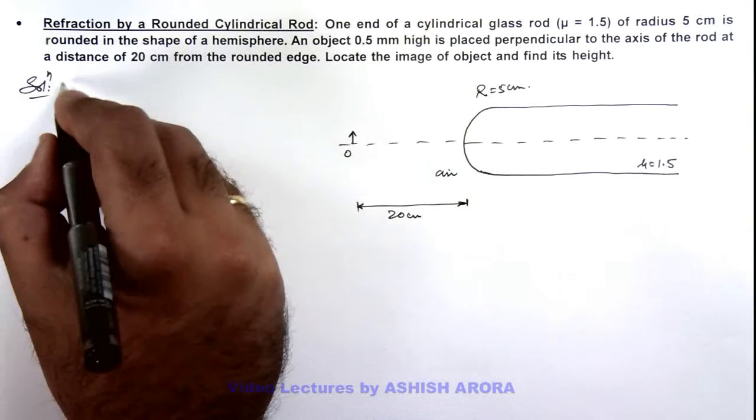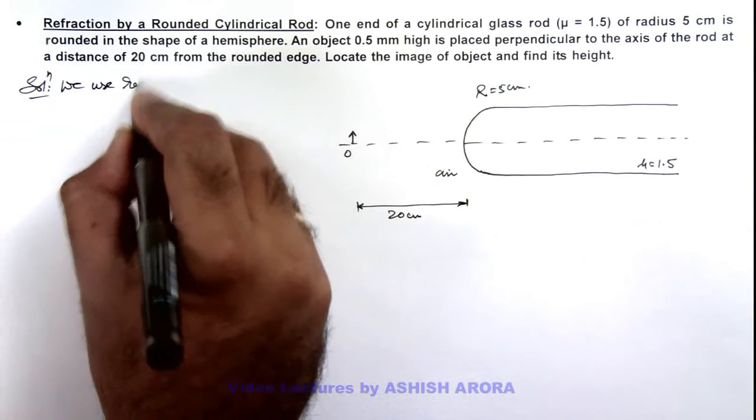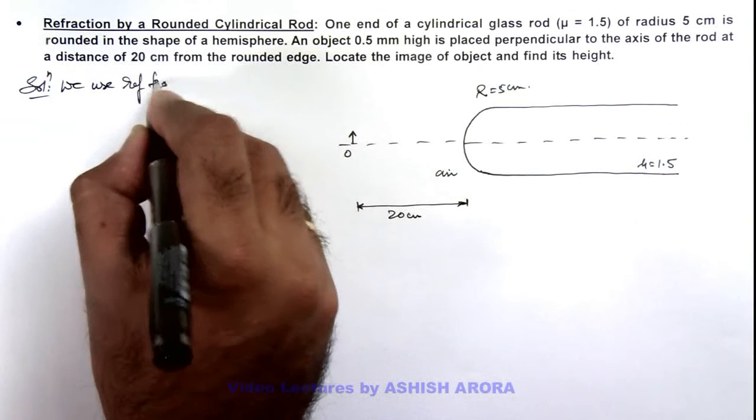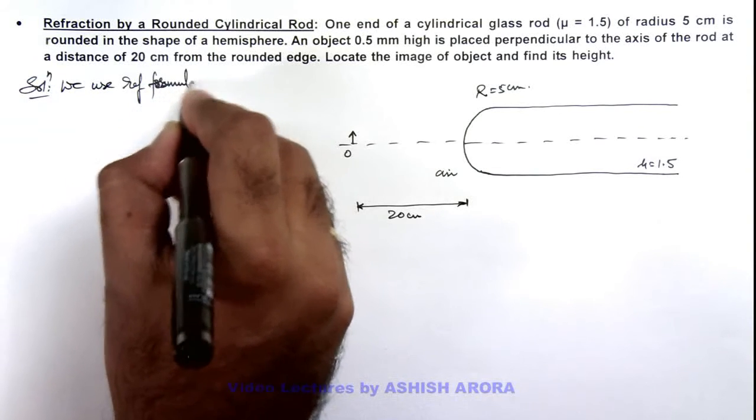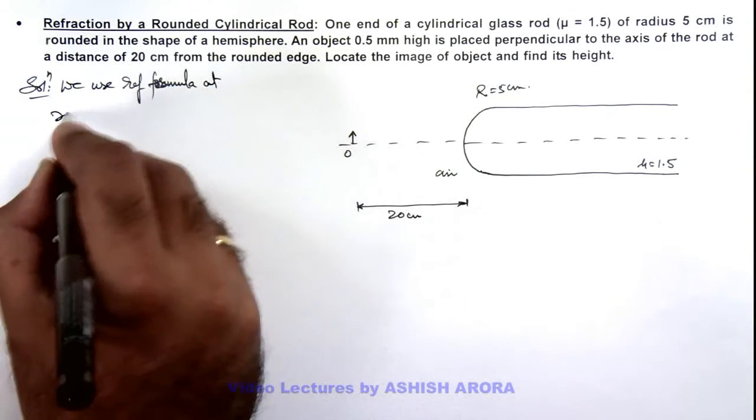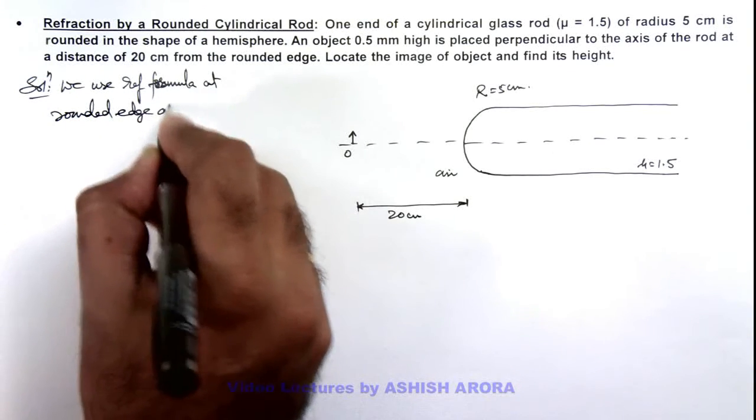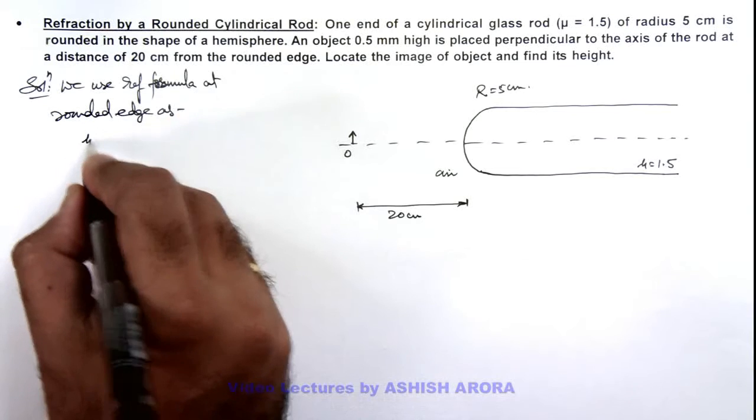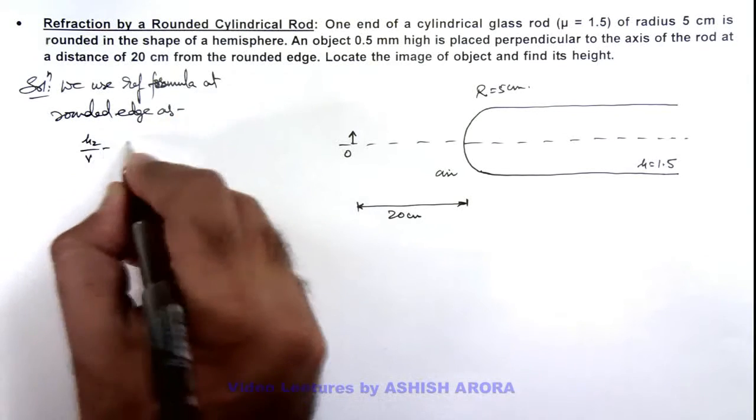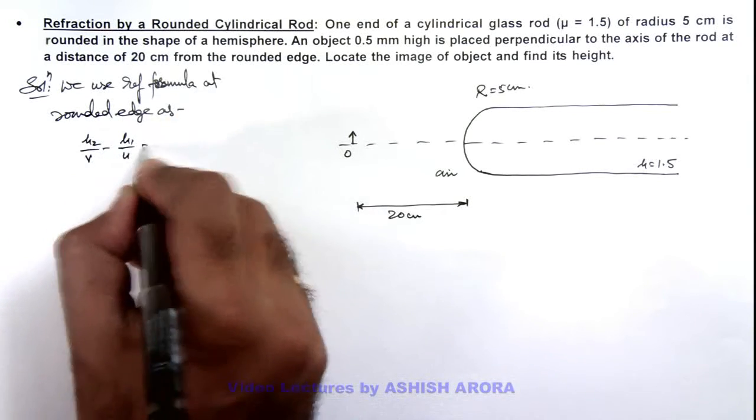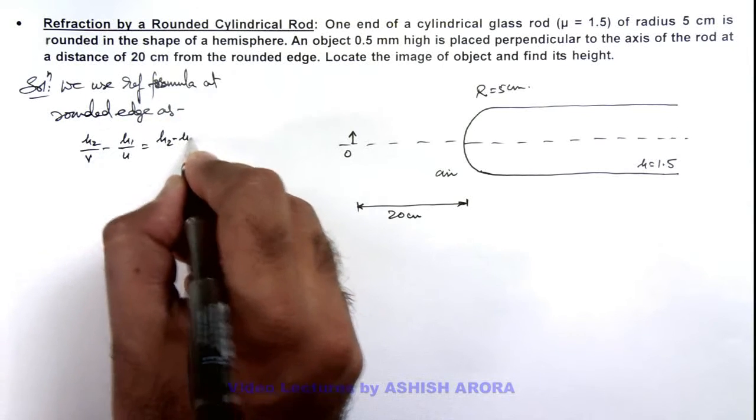So we can write we use refraction formula at rounded edge as: μ₂/v - μ₁/u = (μ₂ - μ₁)/R.